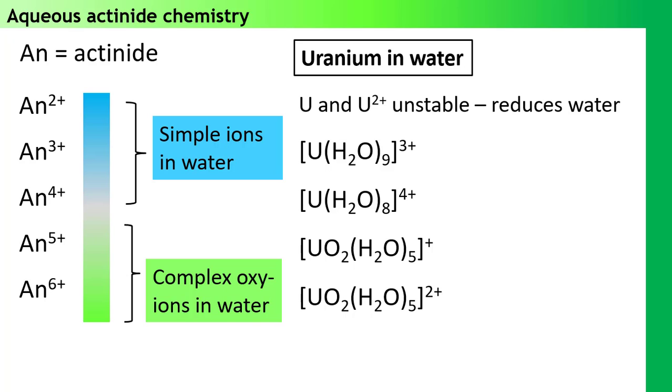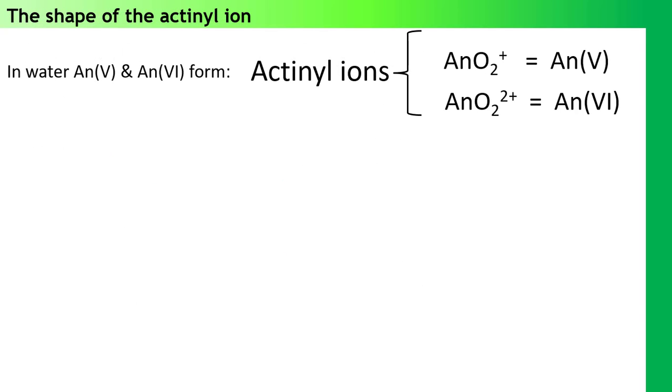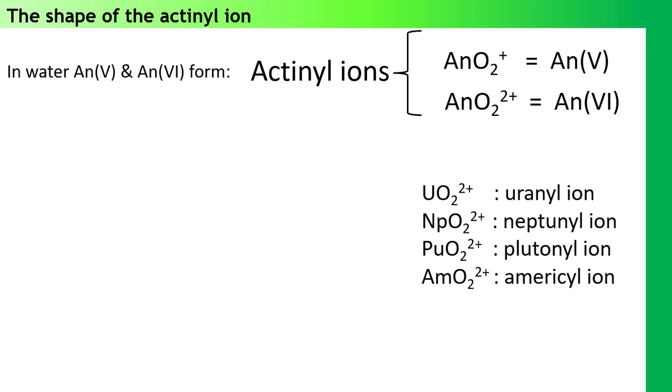But when we oxidize uranium to a 5 plus state, we never ever see a free uranium 5 plus cation. Instead, we always see a complex UO2 species, which is also prevalent when uranium is in the 6 plus oxidation state. The same chemistry is also observed for the neighboring actinides. We collectively call the actinide O2 plus and the actinide O2 2 plus cations actinyl ions. And these include the uranyl, the neptunyl, the plutonyl and the americyl ions. We do need to be a bit careful here and we may need to specify which metal and the oxidation state or the ion charge just to be clear about which species we are referring to.